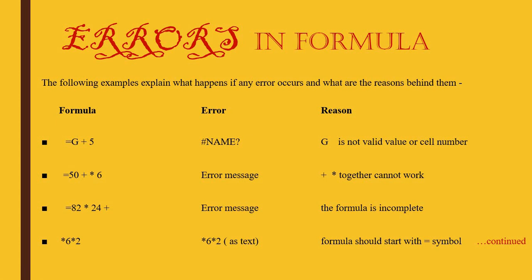Some errors: if someone types =G+5, Excel cannot understand it because G cannot be added to 5 — G is not a valid cell reference and not a number — so it gives an error. If someone writes =50+*6, Excel cannot do both plus and multiply together, so error. If someone writes =82*24+, then 'plus what?' — it is incomplete and gives an error.